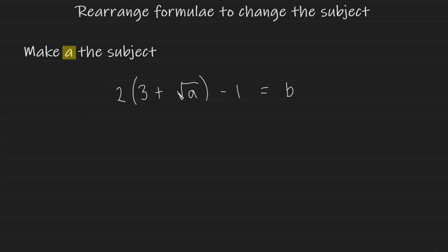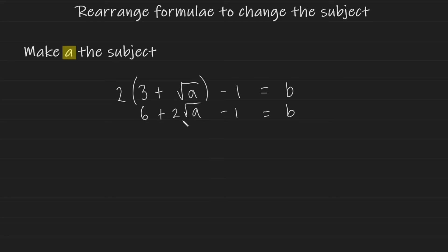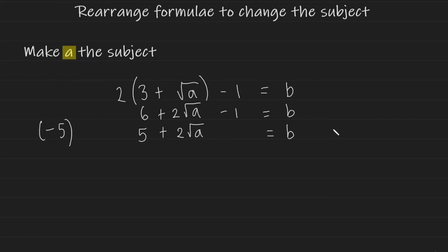Let's take a look at a problem with a new operation — the square root, which we haven't seen in previous examples. You first begin by expanding the brackets: 2 multiplied by 3 gives 6, and 2 multiplied by root a gives 2 lots of root a, then we have minus 1 on the outside. Simplify the left hand side by collecting like terms — 6 minus 1 simplifies to 5 — giving 5 plus 2 root a equals b. There is a 5 being added onto the root a and a 2 multiplied onto it, so let's subtract 5 from both sides.